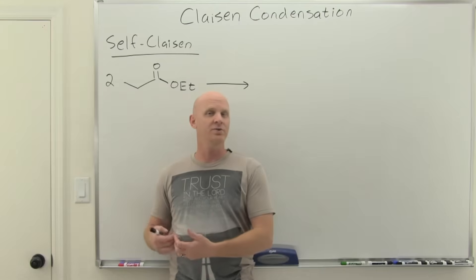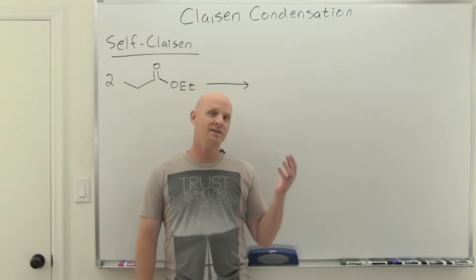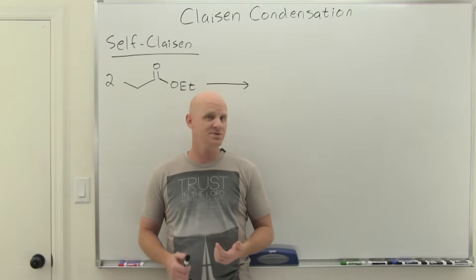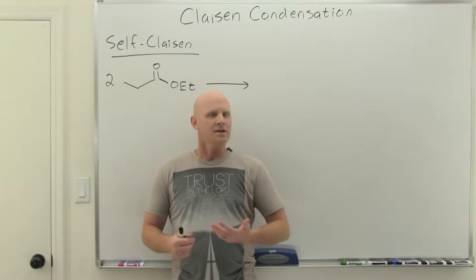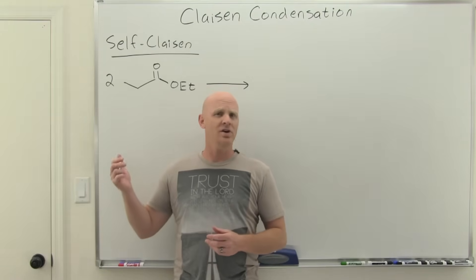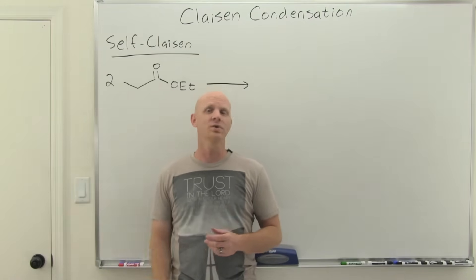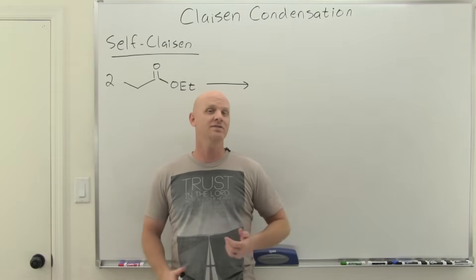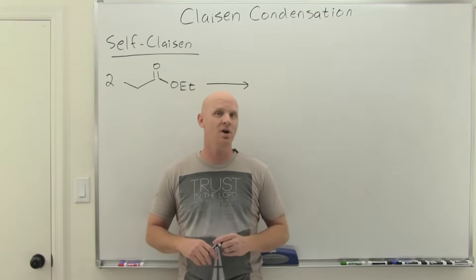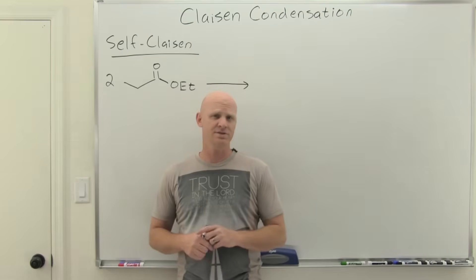When you attack a ketone or aldehyde you're doing nucleophilic addition, but when you attack an ester you're doing nucleophilic acyl substitution, so a little bit different in your products as well. In the aldol you get a conjugated enone, but in the Claisen you're gonna see a beta-dicarbonyl as your product and that's how you'll distinguish between the two.